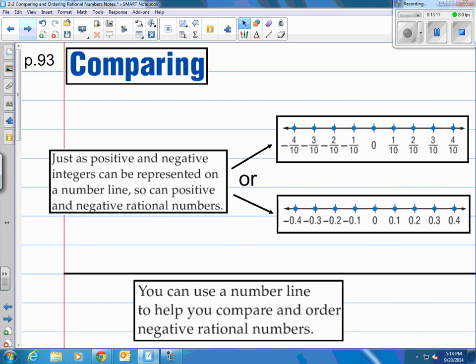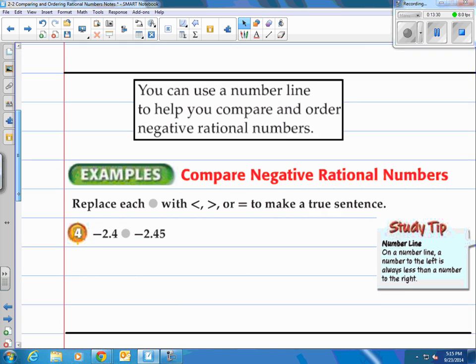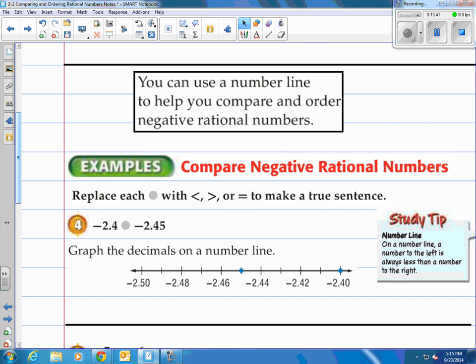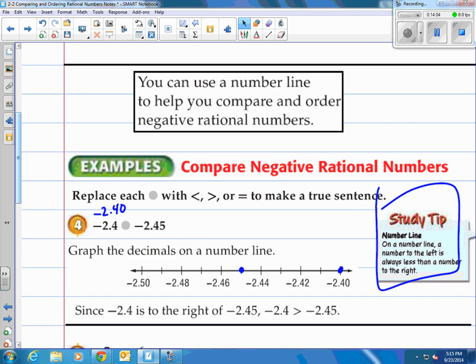All right. Last part. It says just as positive and negative integers can be represented on a number line, so can positive and negative rational numbers. You can see they have number lines there with the fractions and then the decimals. So it says you can use a number line to help you compare and order negative rational numbers. Take a look at the example. Again, you're looking at number 4. Basically, is negative 2.4 less than, greater than, or equal to negative 2.45? Well, graph the decimals on a number line. You've got to remember that this negative 2.4 is actually negative 2.40. So notice where they located those. Here's your negative 2.40 and there's your negative 2.45. Well, if you read the student tip over here, it says any number to the left is always less than a number to the right. Since negative 2.4 is to the right of negative 2.45, negative 2.4 is greater than negative 2.45.